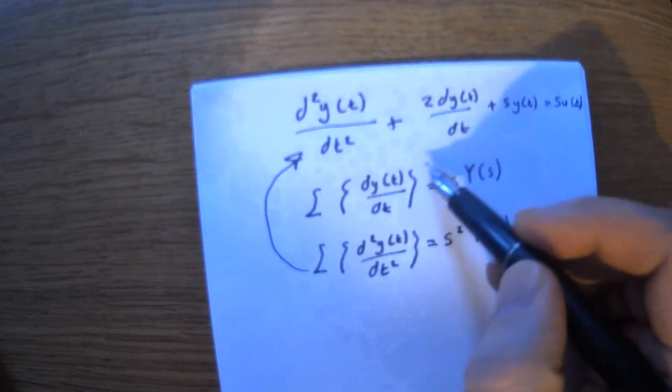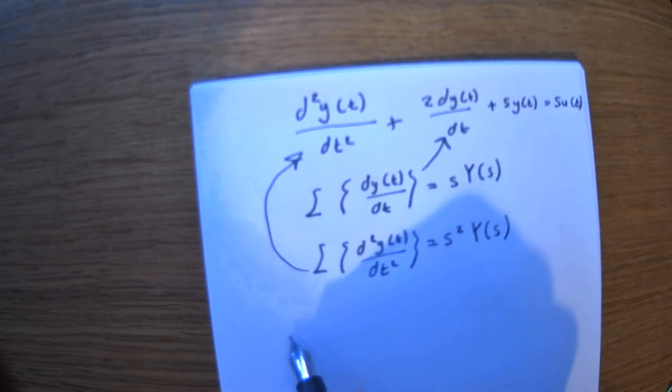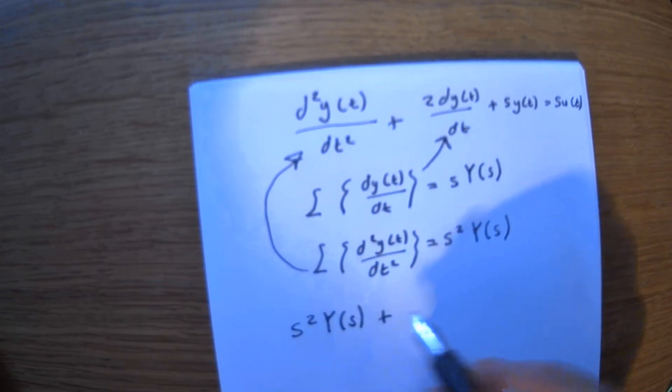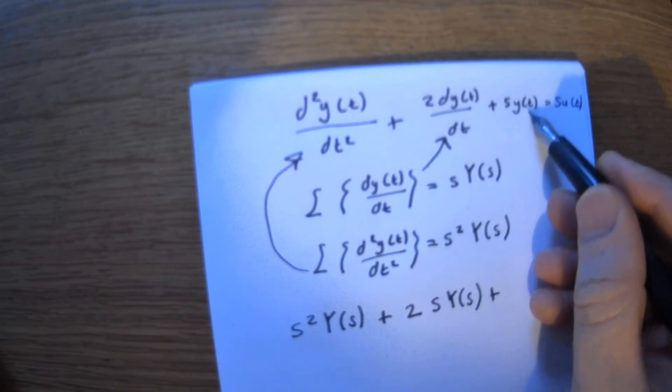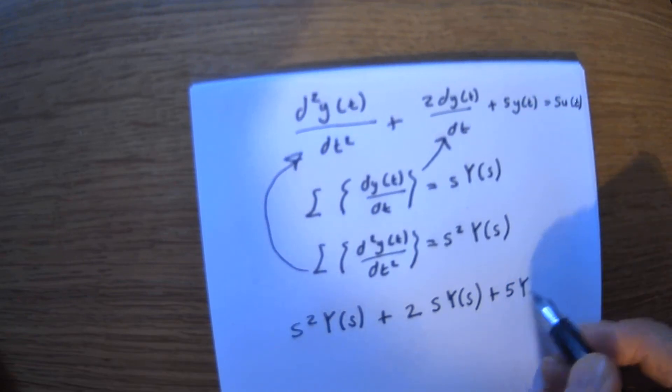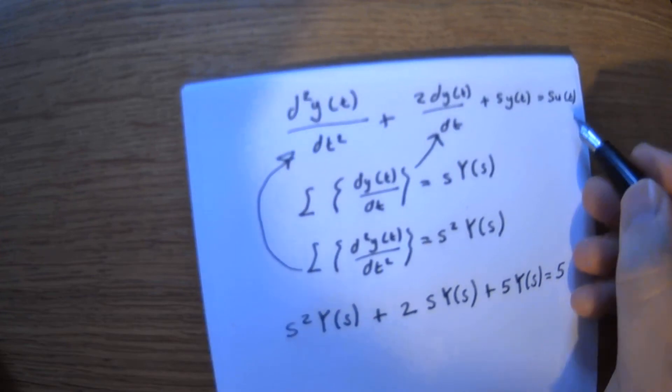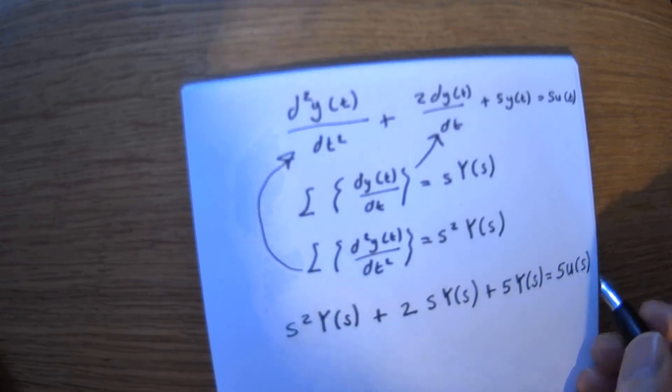So then it effectively just becomes s squared capital Y of s, plus two - remember there's a two there - that becomes s Y of s, plus - remember - plus five Y of t just becomes five capital Y of s, equal to five U of t becomes capital U of s.